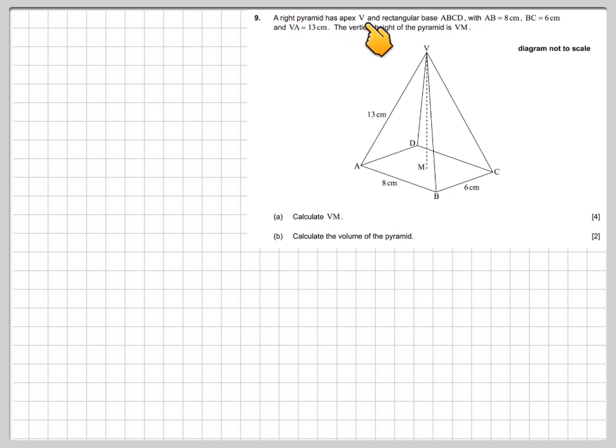A right pyramid has apex V and a rectangular base ABCD. We've got the apex up here, the top of the pyramid, and the base is ABCD, with AB being equal to 8 and BC being equal to 6. It says calculate the height VM, this height here.